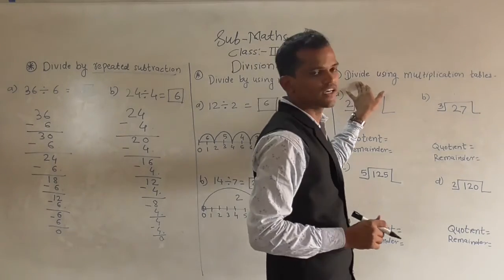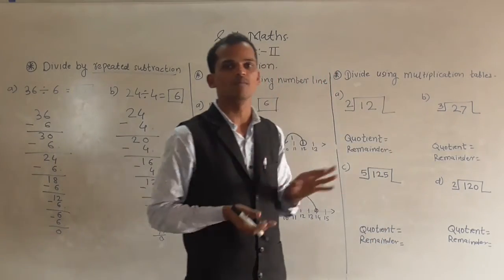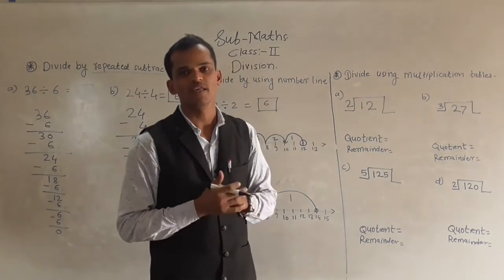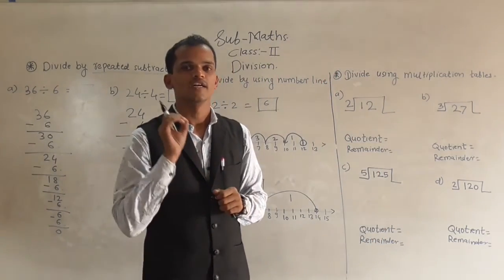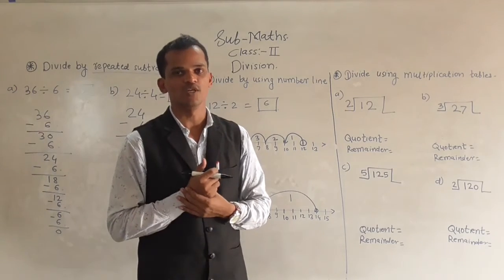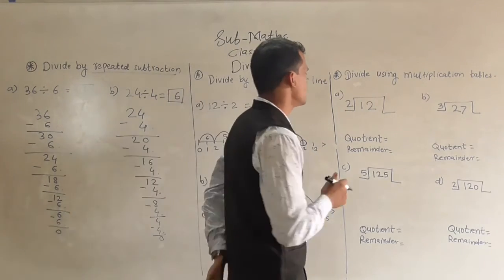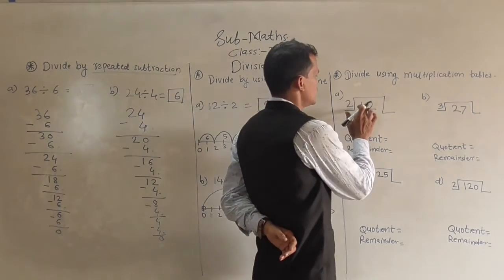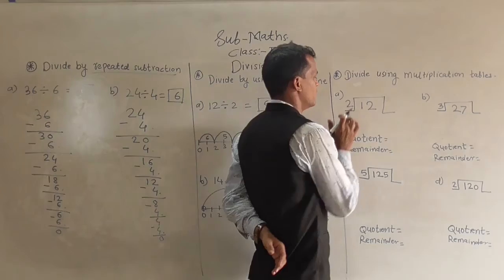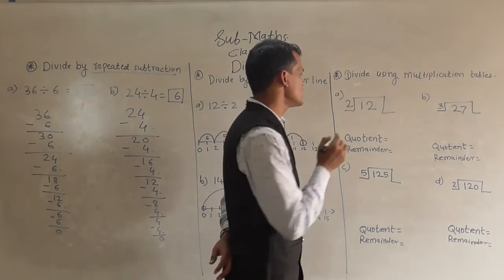Next: divide using multiplication tables. Another name for this method is the long division method. See the example: 12 divided by 2.